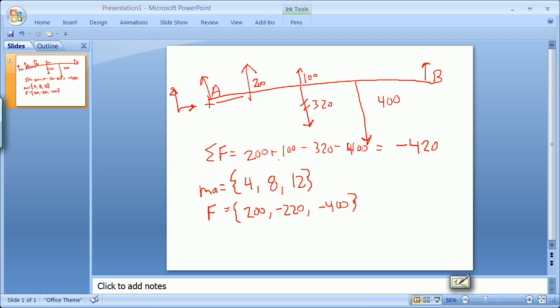We'll just make this minus 220, and then minus 400. Now don't be confused in terms of thinking you're doing any kind of moment calculations in the traditional way. What you're doing is you're multiplying 4 by 200, 8 by minus 220, and 12 by minus 400.